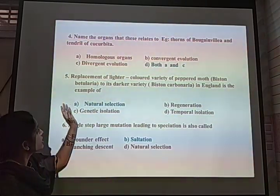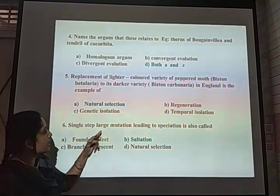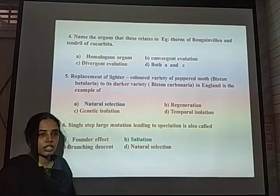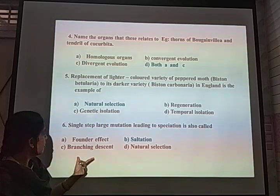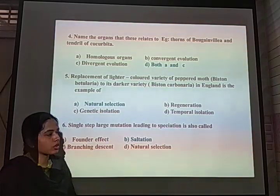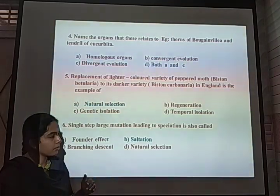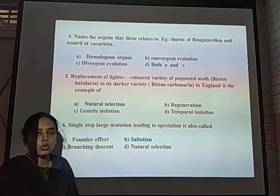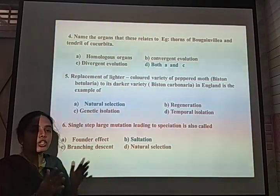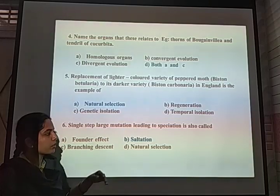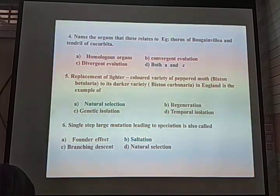Next MCQ: A single step large mutation leads to what? The options are founder effect, saltation, branching descent, and natural selection. Mutation is the raw material for evolution, described by Hugo de Vries using the evening primrose. When mutation occurs in a single step showing numerous variations, that phenomenon is called saltation. The answer is option B, saltation.